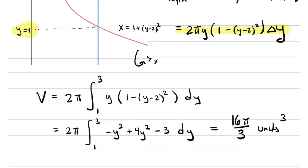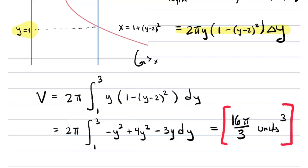I did a little bit of the computation to give you an idea. It's all polynomial, so you have to expand everything out. Stop the video and do this at your own speed: square out (y minus 2) squared, push the minus sign through carefully, gather like terms, distribute the y, and you should get minus y cubed plus 4y squared minus 3y. You can check that the integral comes out to be 16π over 3. I'm not going to include the arithmetic in these videos because it makes them too long.